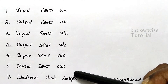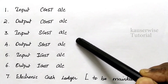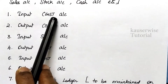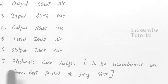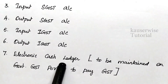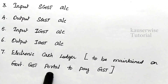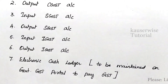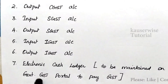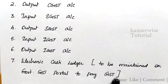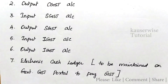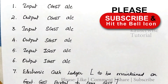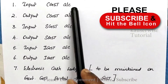For all three types of GST — Central GST, State GST, and Integrated GST — both input and output accounts must be maintained. The last important account is the Electronic Cash Ledger, which is maintained on the government GST portal to pay GST. The final tax amount is calculated using a tabular format, and the final amount is payable to the government through the GST portal.